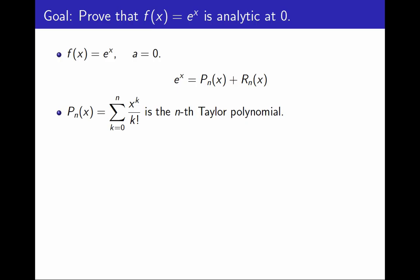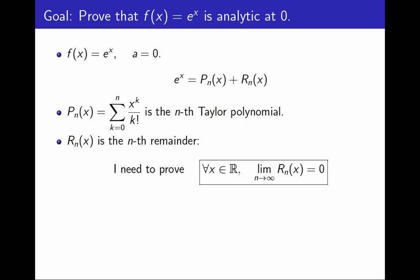And the nth remainder is simply the difference between the function and the Taylor polynomial. Then, with this notation, my goal in this video is to prove that the limit as n approaches infinity of the nth remainder is 0.